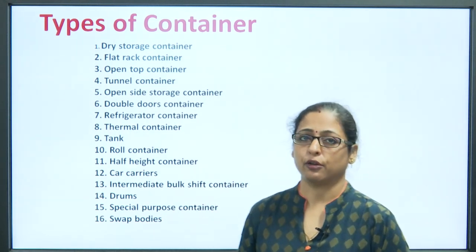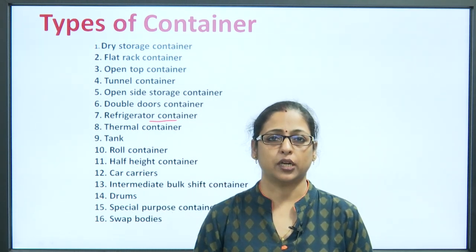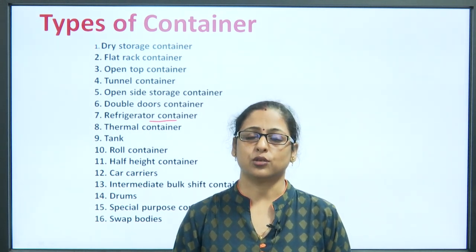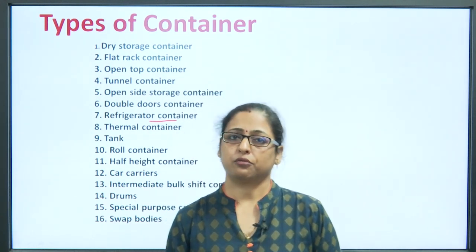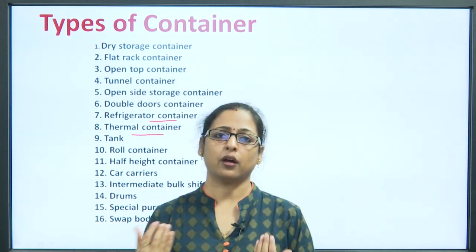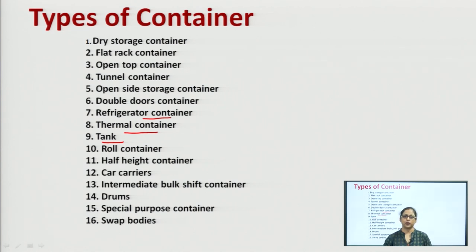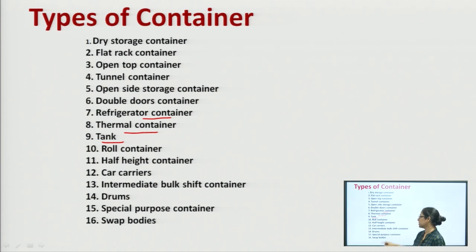Refrigerated containers are those in which the container is completely provided with refrigeration facilities, so that perishable products such as dairy products, fruits, vegetables, or ice creams can be sent over longer distances. Thermal containers have a lot of insulation on all sides and help maintain a particular temperature when products are in transit. Tanks are slightly cylindrical in shape and are used for the transportation of liquid or gaseous material such as petrol, water, oil, or gases.